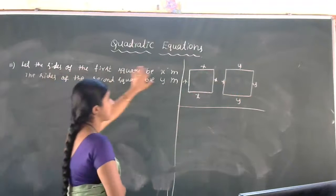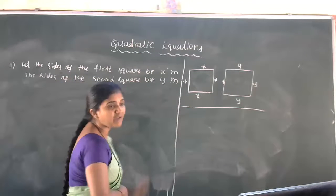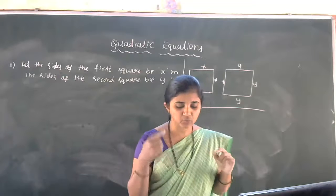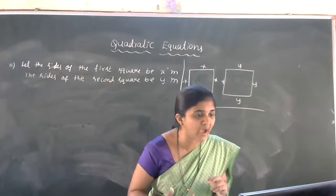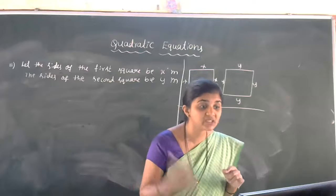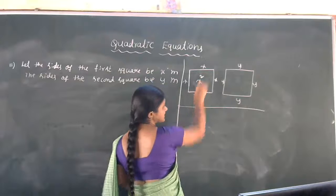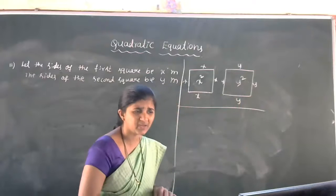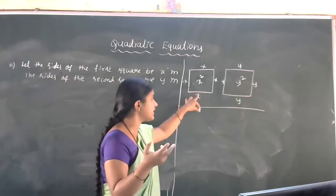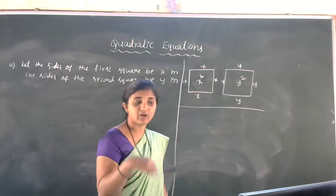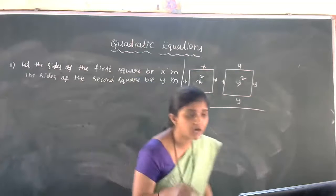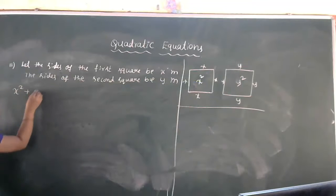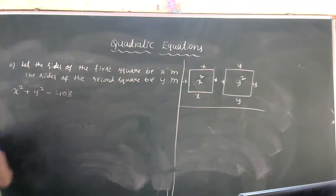Let the sides of the first square be x meters and the sides of the second square be y meters. The area of the first square is x² and the area of the second square is y². According to the first statement, the sum of the areas of two squares is 468, so x² + y² = 468.